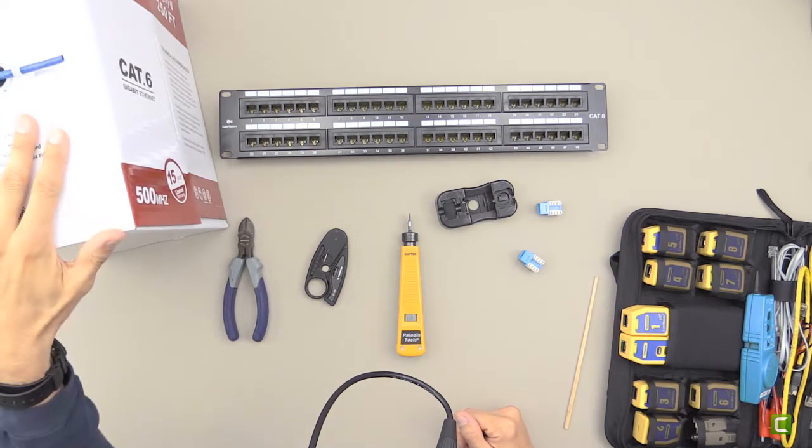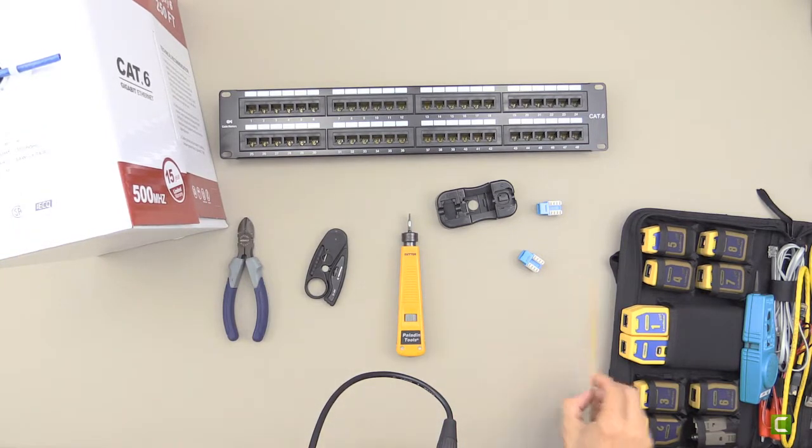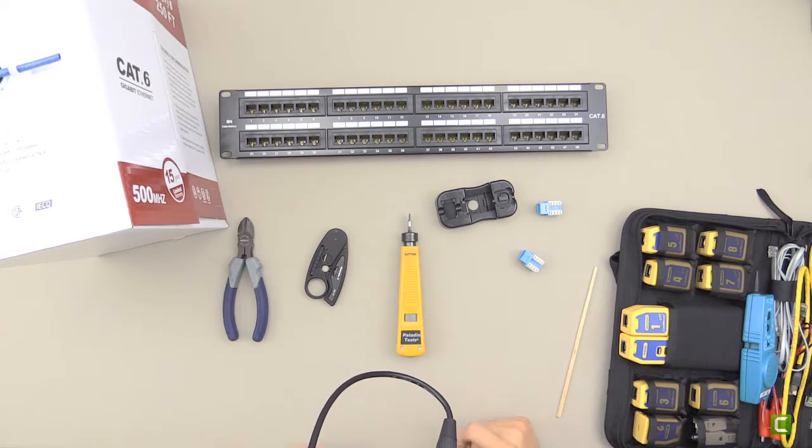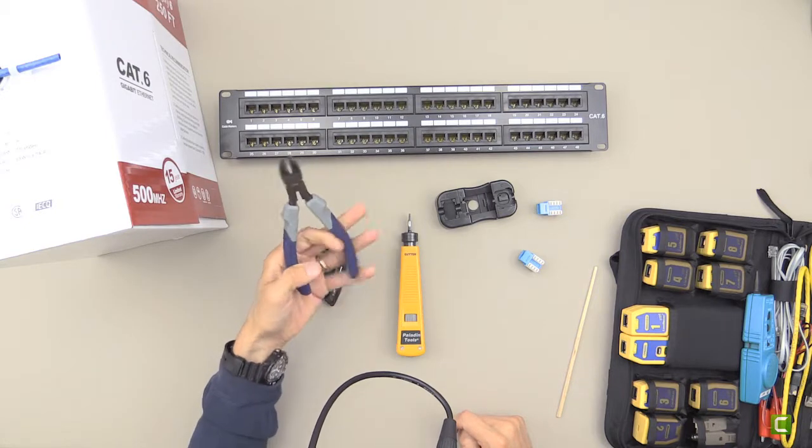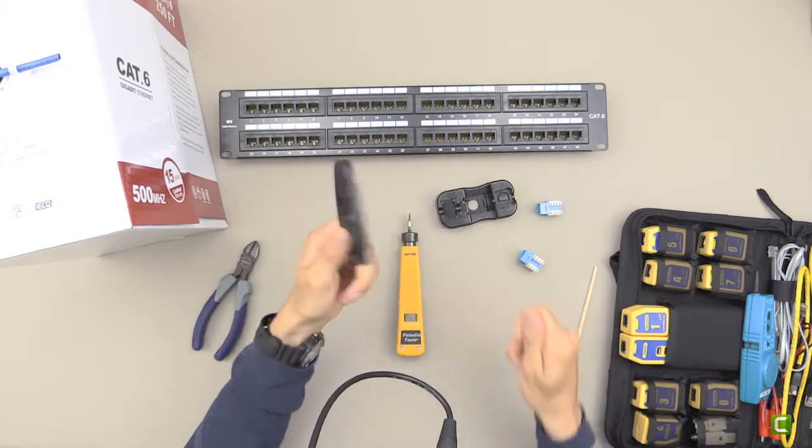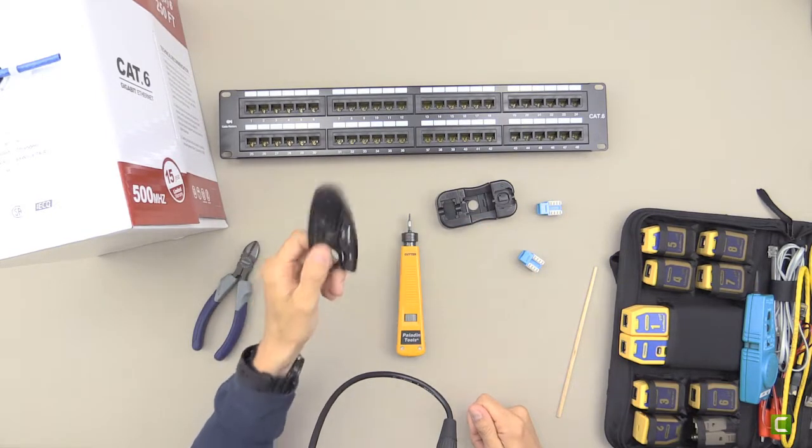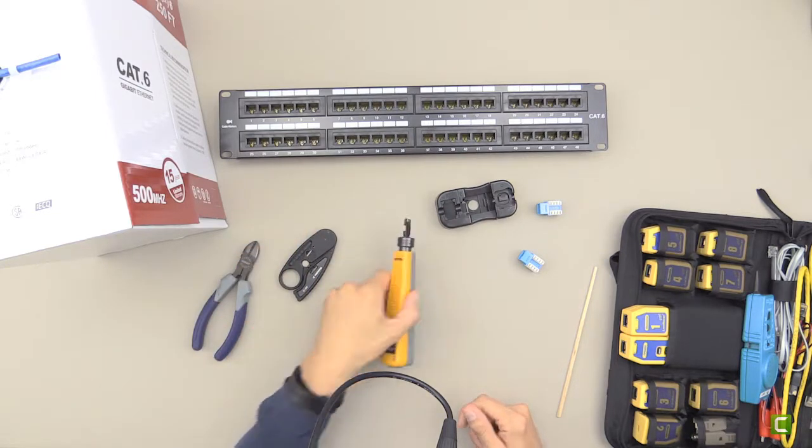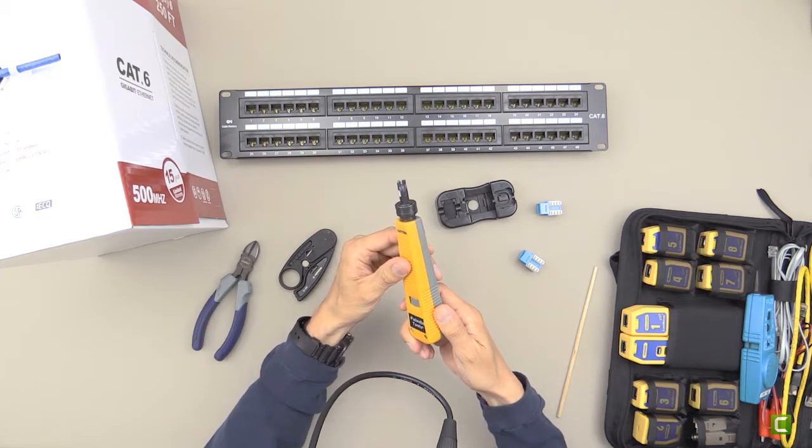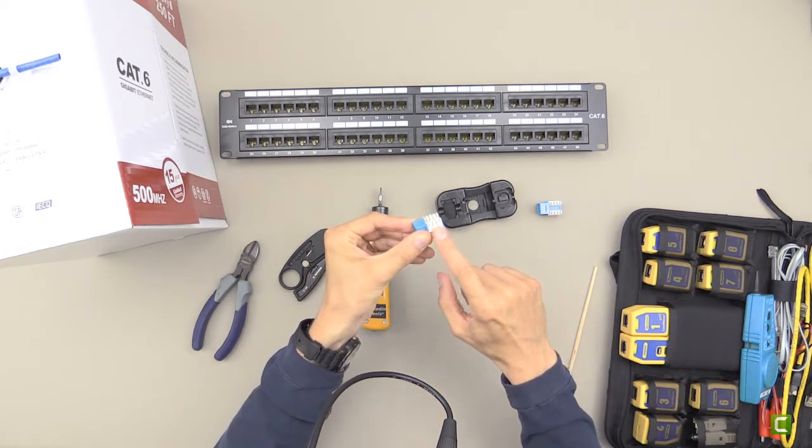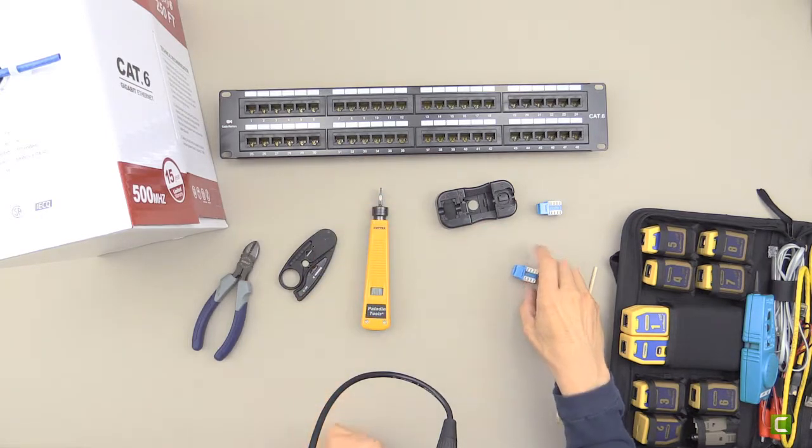You'll need some cable—I've got a CAT6 cable here, and everything is CAT6: the patch panel, cable, and RJ45 jacks. Then you need some tools. You should have a good cutter to cut the cable, a wire stripper to strip the plastic jacket off and expose the wires, and then a punch-down tool to punch down the individual wires to all these connections on the jack and the patch panel.